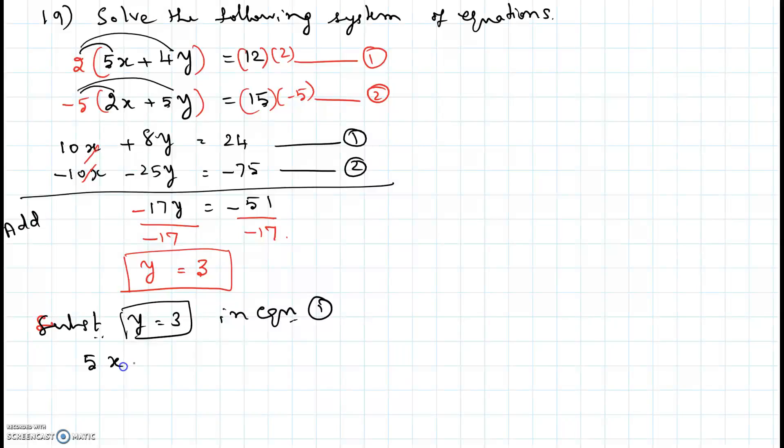Equation 1 is 5x plus 4y. We are going to substitute that y equal to 3 here, equal to 12. So you get 5x plus 12 equal to 12.